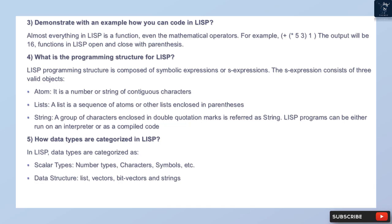Question 5: How are data types categorized in Lisp? In Lisp, data types are categorized as scalar types — number types, characters, symbols, etc. — and data structures including list, vectors, bit vectors, and strings.